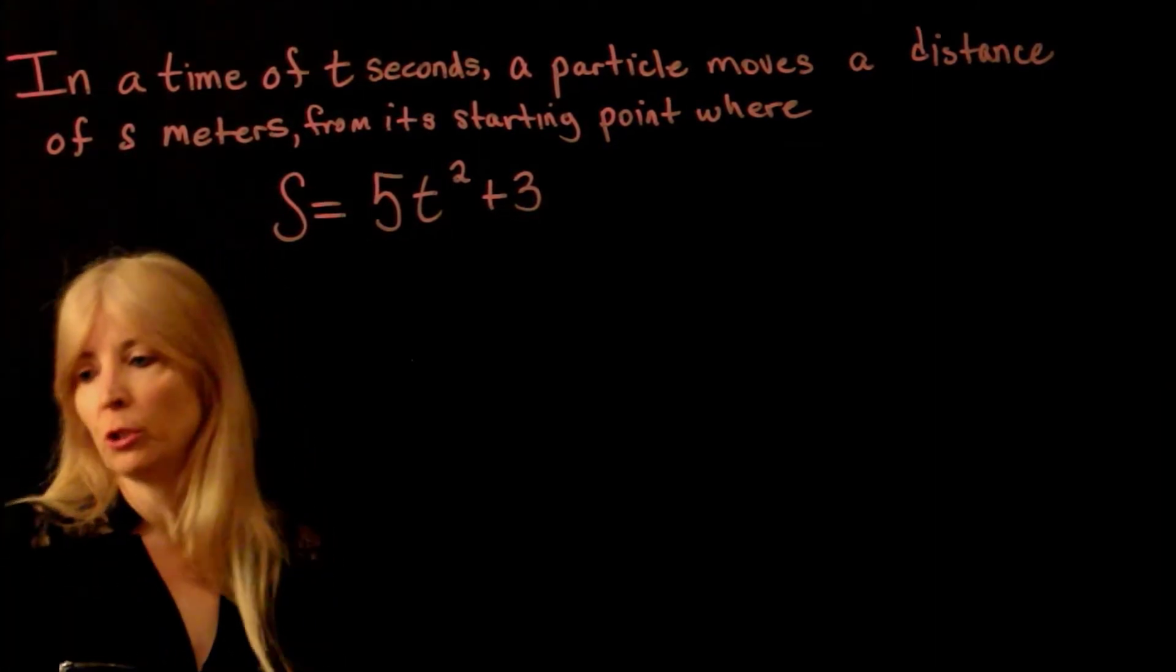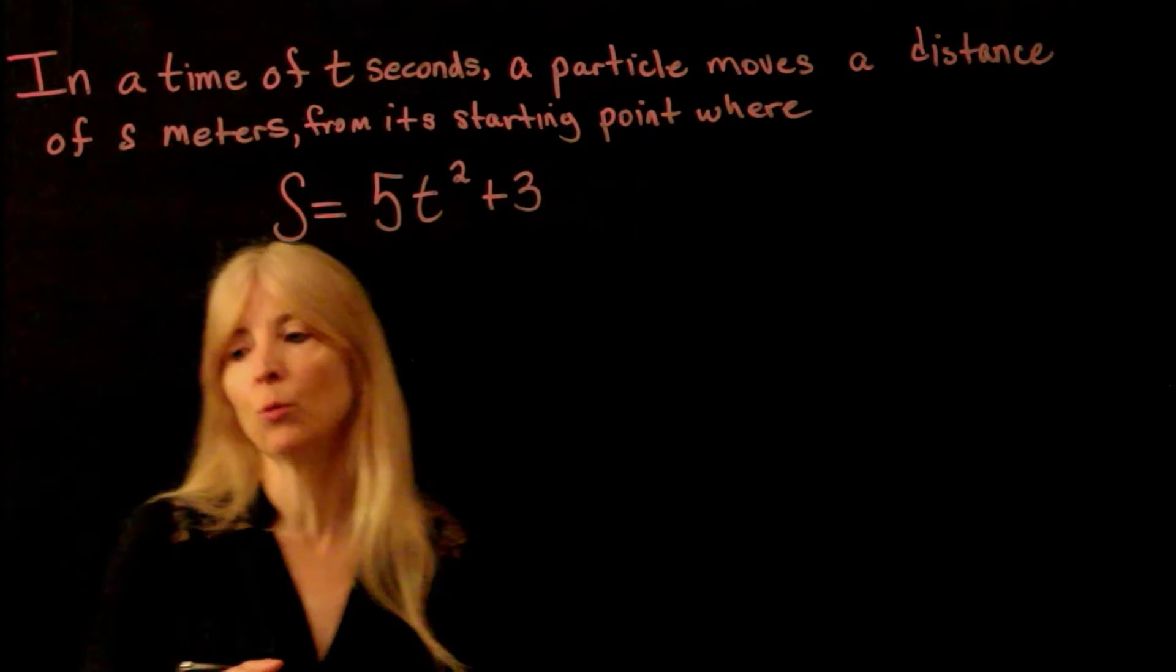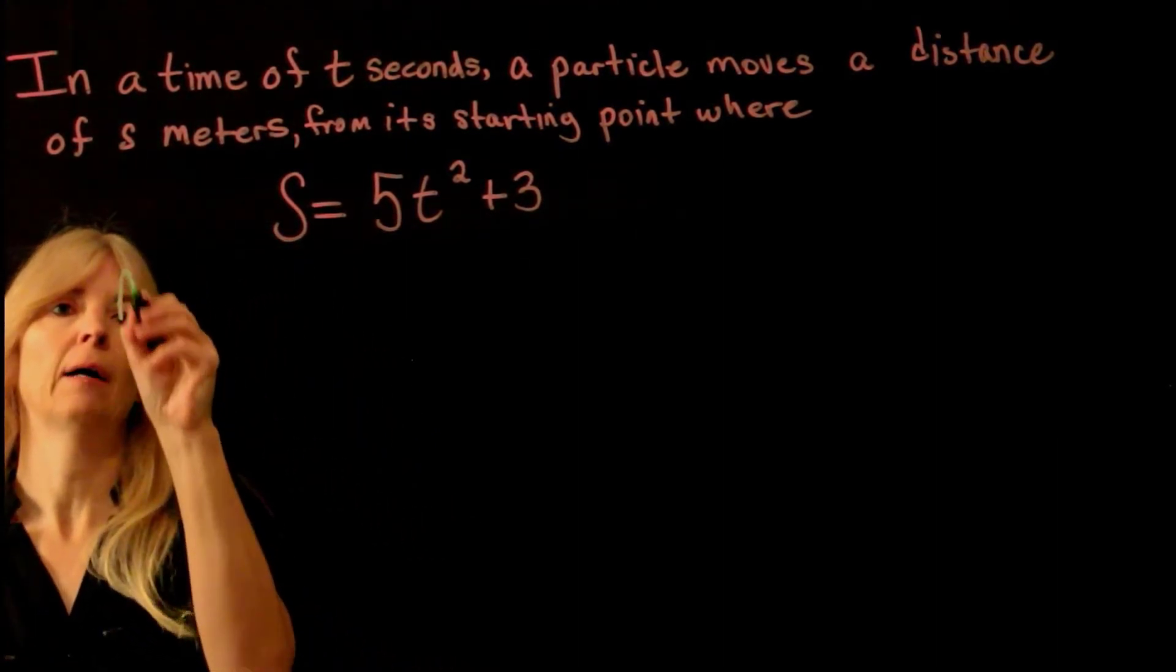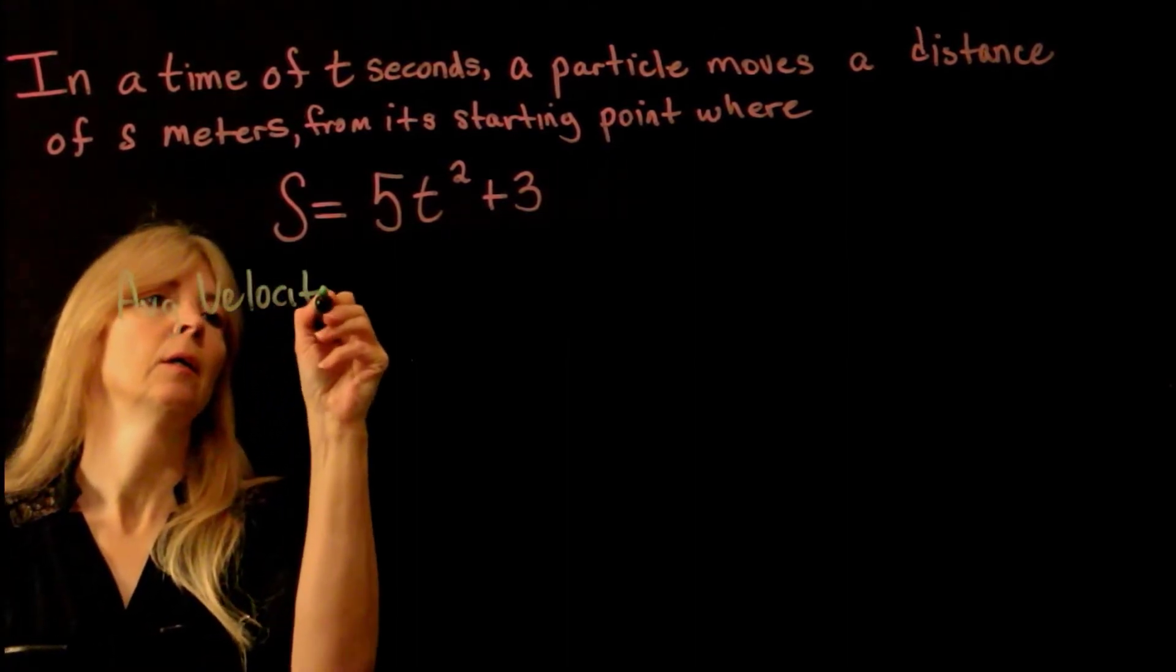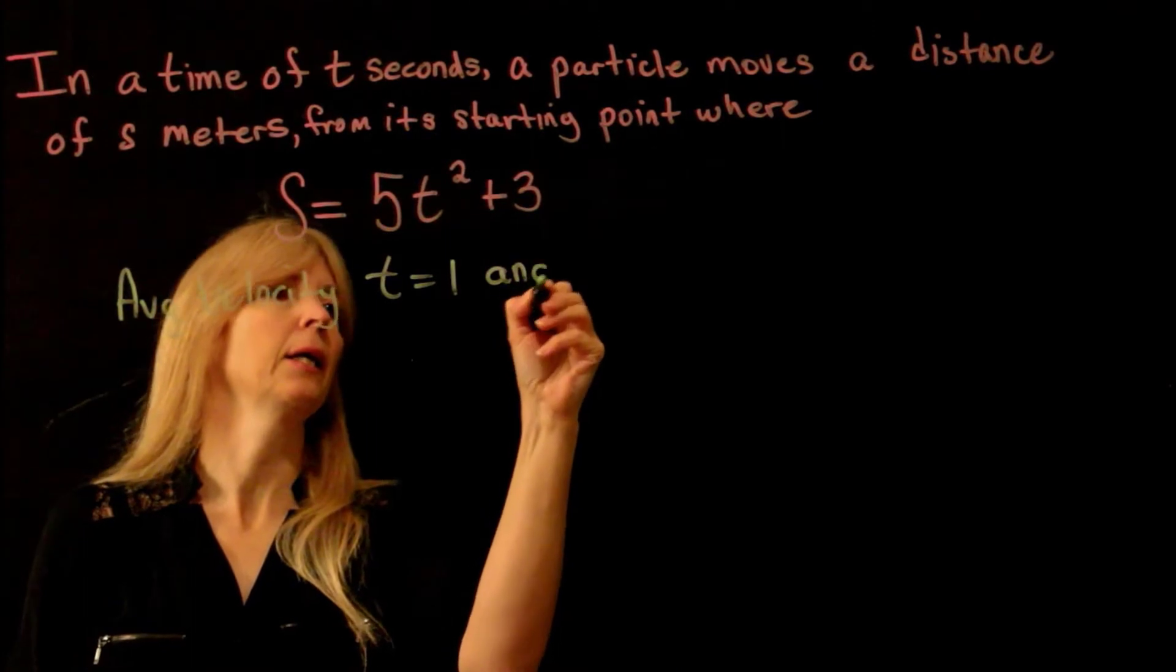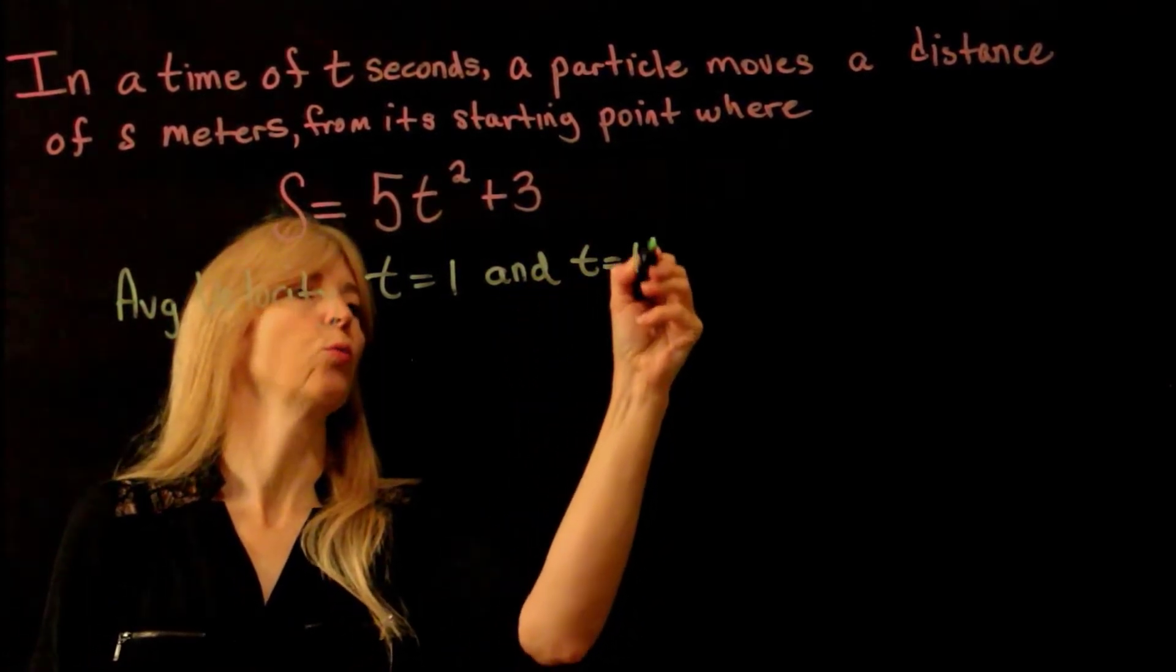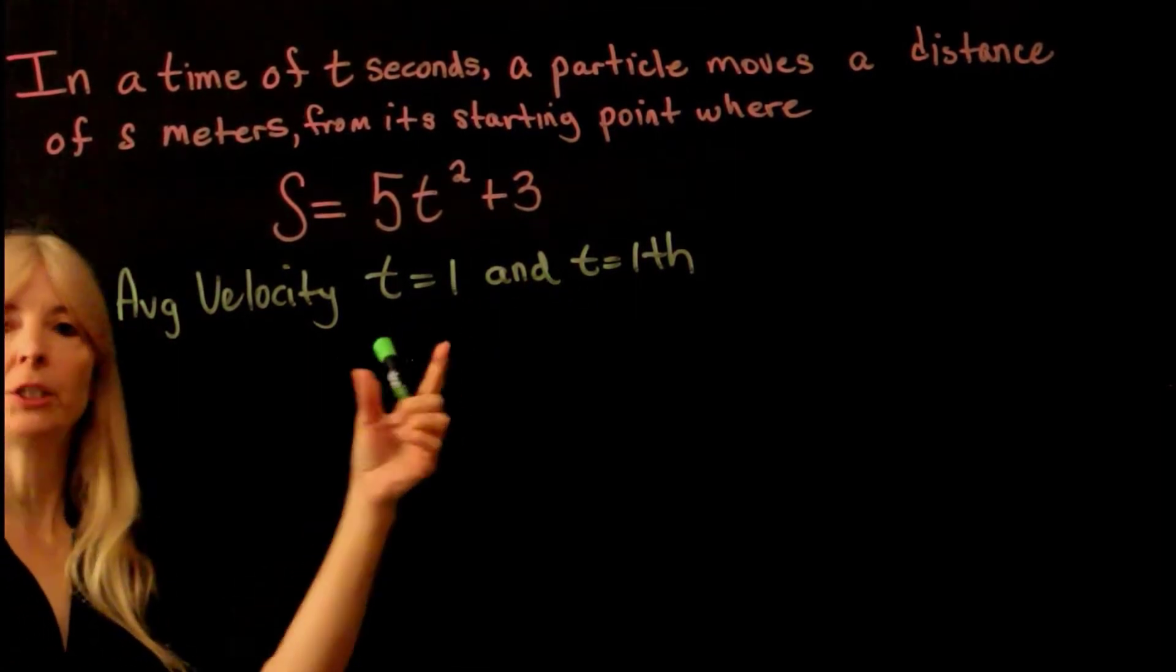And it wants you to find the average velocity between t equals 1. So average velocity between t equals 1 and t equals 1 plus h. Where, remember, h is that gap.